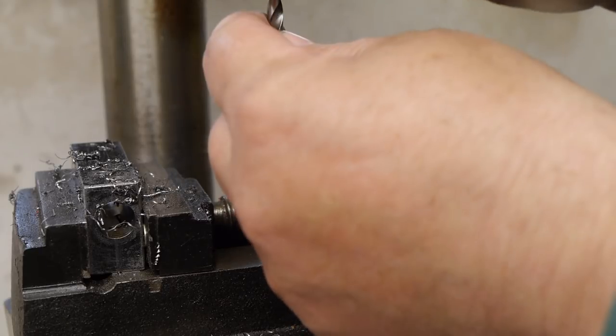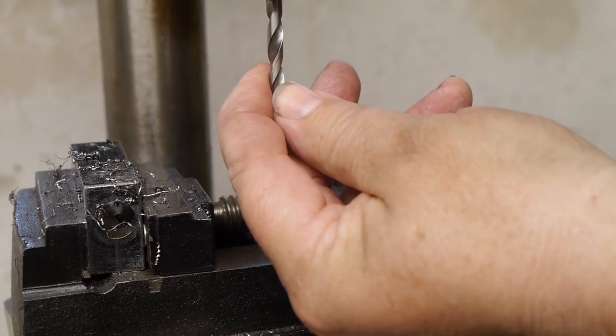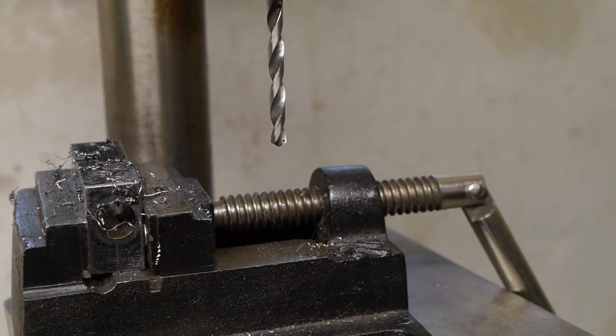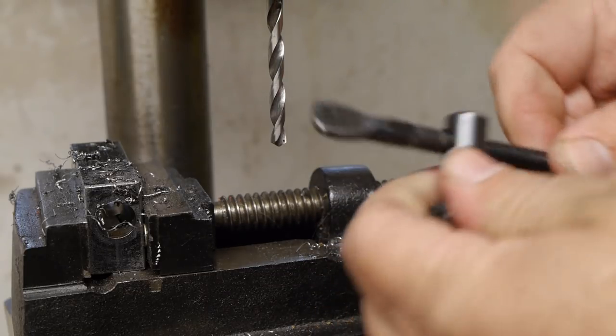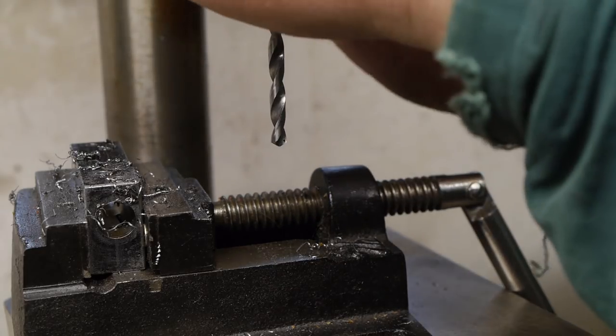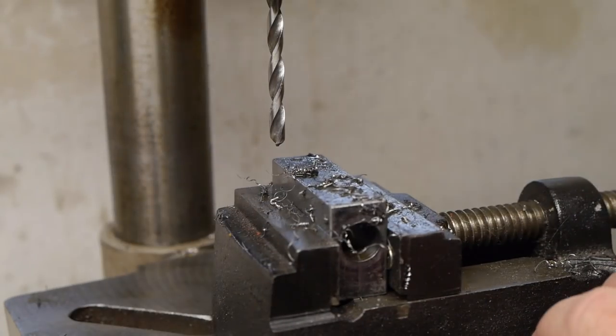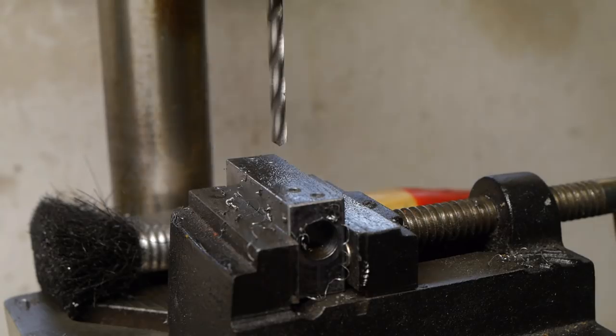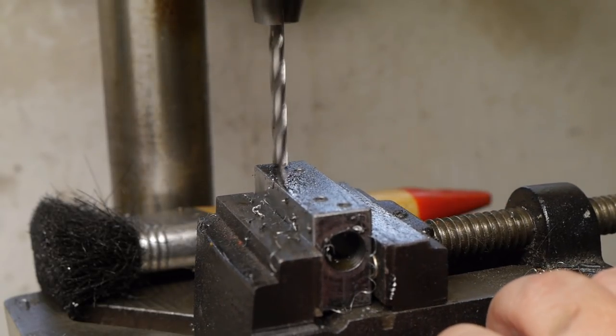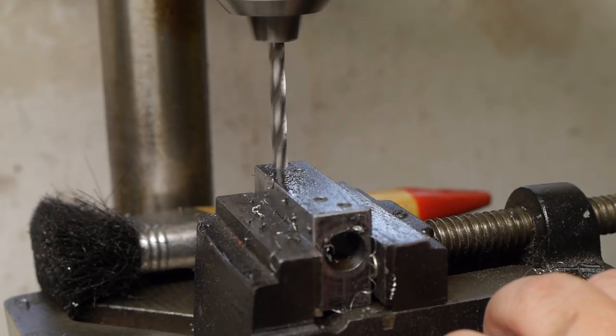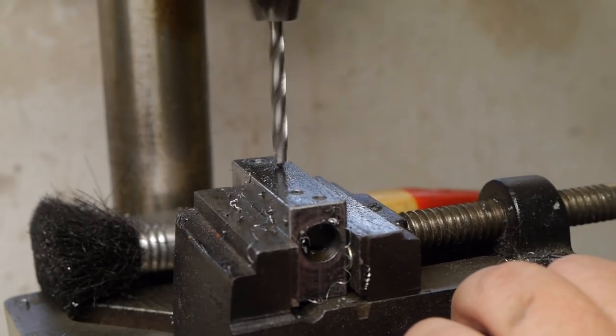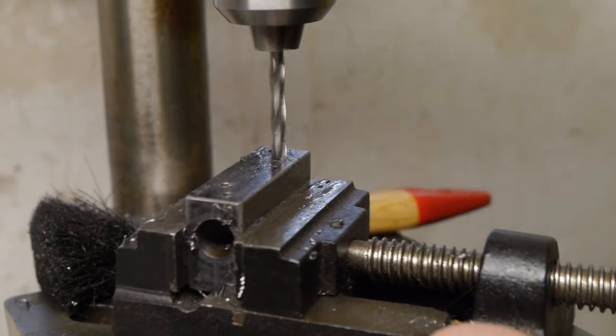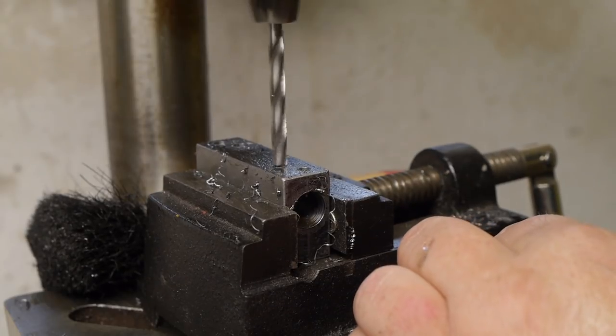5 millimeter drill bit for the M6 set screws. Damn, chuck is loose. It's annoying. Almost lost it there. It kind of surprised me.